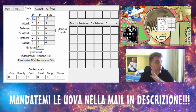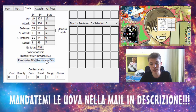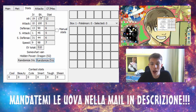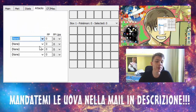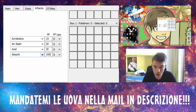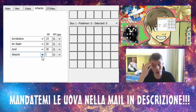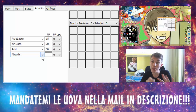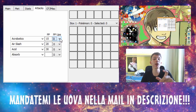Per le statistiche, se volete aggiungere degli IVs fatelo, altrimenti potete fare Randomize IVs e Randomize EVs, oppure potete non mettere niente. Poi abbiamo gli attacchi: potete fare quello che volete, metterci Acrobazia, Air Slash, Acido, c'è qualsiasi attacco. Potete selezionare i PP, mantenete massimo 40 per non creare problemi col gioco. C'è anche un upgrade dei PP: se mettete 3 verranno moltiplicati secondo certi valori.